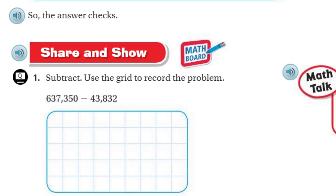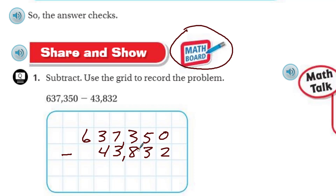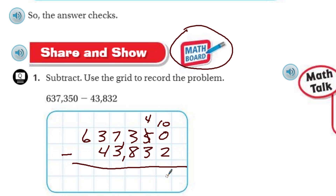Now we come to Share and Show — this is where you get the math board. Subtract and use the grid to record the problem. I'm going to write 637,350 minus 43,832. I've got to line up all my digits. As you can see, the numbers being subtracted don't have the same number of digits. Now I'm going to subtract. You can't take 2 from 0, so he goes next door and borrows — now he has 10. 10 minus 2 equals 8. Then 4 minus 3 is 1.